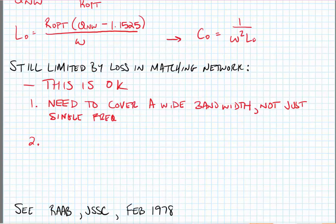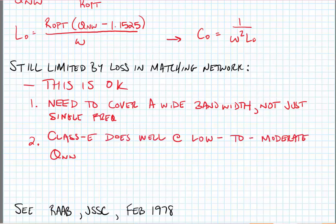Now the second reason, as was noted by Fritz Robb in a few classical papers, notably JSSE of February 1978, the Class E does very well at low to moderate network quality factors. Now in his papers, he noted that for a network quality factor as low as one, the drain efficiency of the Class E PA could be still above 90%. Now this doesn't include any other non-idealities like switching losses or matching network losses, but it does show that the Class E network is resilient.